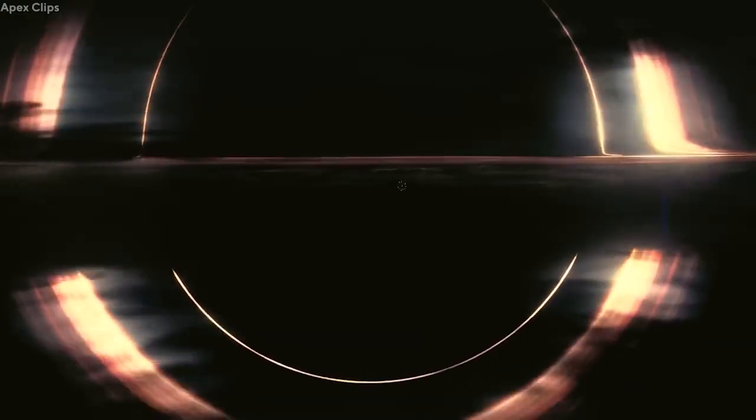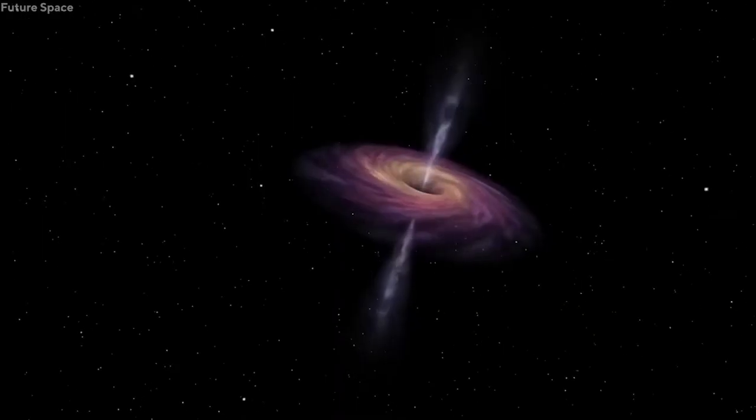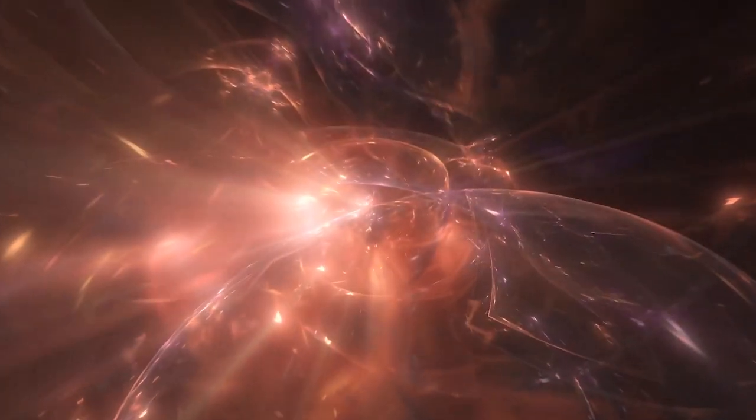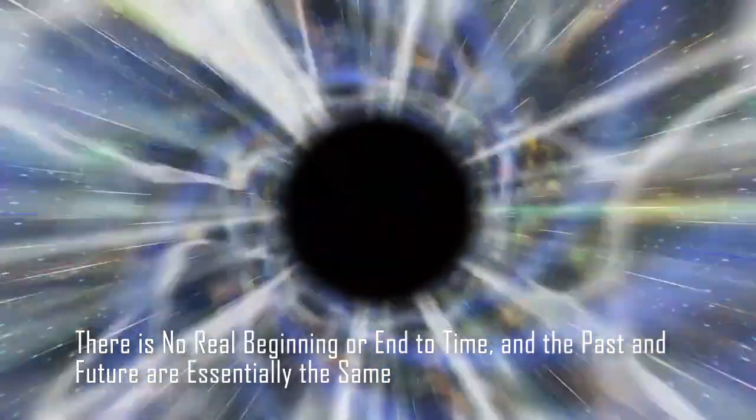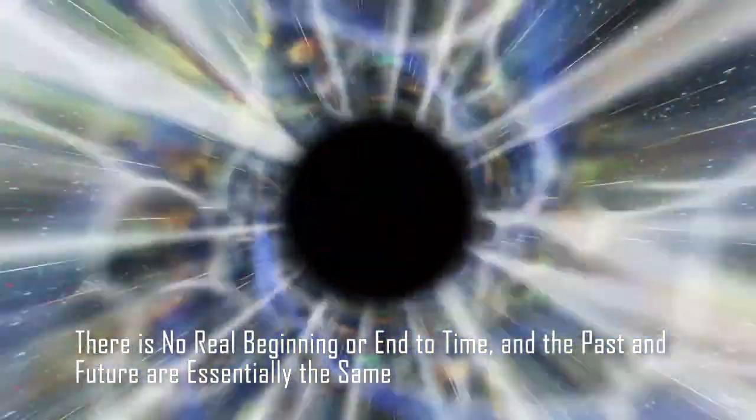In this theory, the universe we observe today is just one of many universes that have existed before and will exist in the future. The cyclic nature of the universe means that there is no real beginning or end to time, and the past and future are essentially the same.